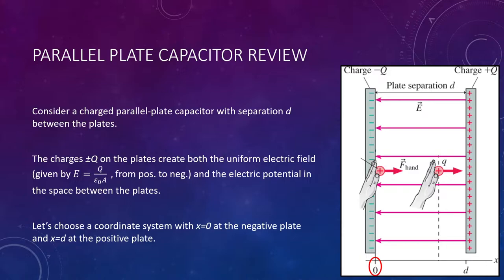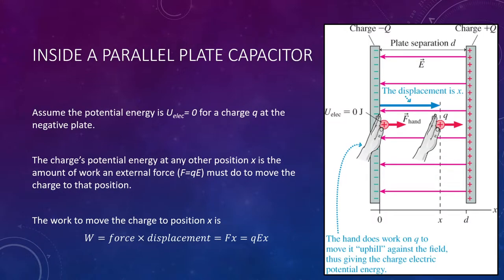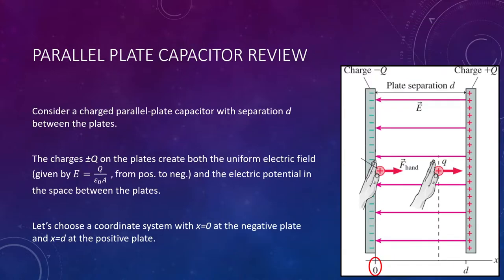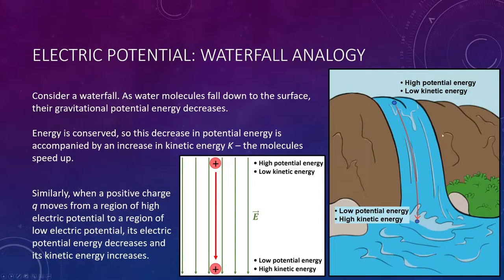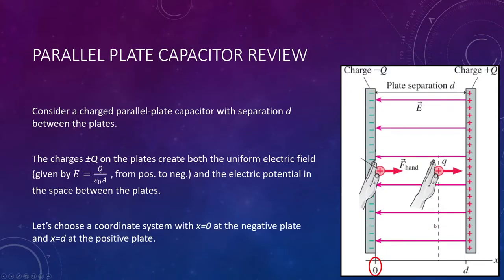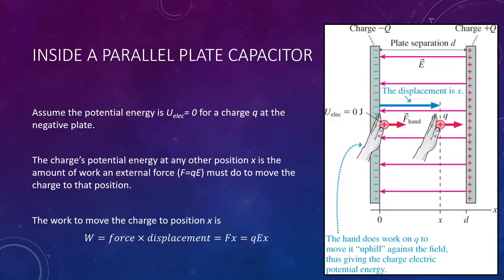We can also say that our electric potential energy at the negative plate is also zero. This goes back to our waterfall analogy. Right at the bottom, once the water molecule moves all the way down, it doesn't have any potential energy anymore because it's at the surface. The same thing is true here — at the negative plate, the potential energy is equal to zero. This is just the waterfall analogy turned technically sideways.